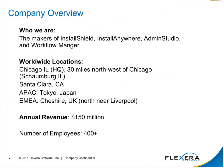A brief overview of who we are. You might have known us under another name because in the last four years we've changed names three times. We are Flexera Software. We are the makers of InstallShield, InstallAnywhere, Admin Studio, and Workflow Manager. We have our main headquarters in the Chicagoland area, 30 miles northwest of Chicago in Schaumburg. We've also got offices in Santa Clara, California, Tokyo, Japan, and over in EMEA in Cheshire, just north of Liverpool. On average, we have about $150 million annual revenue and just over 400 employees.